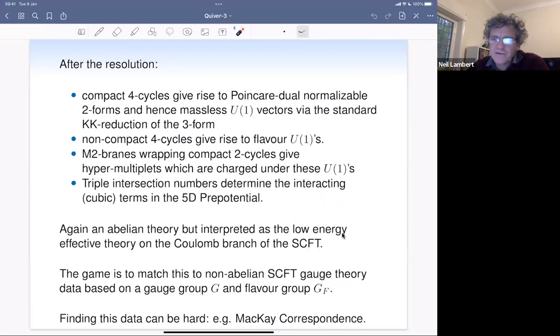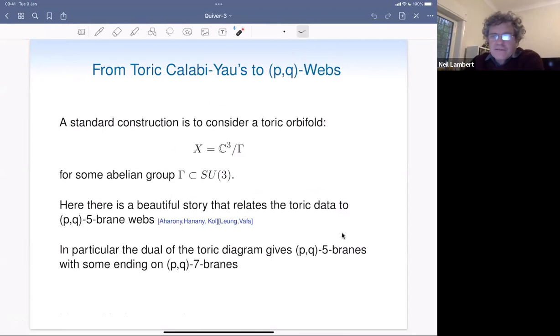The non-compact 4-cycles, they would give you vector fields, but their kinetic terms are infinite. So basically, you just get symmetry, so they give rise to flavor U(1)s. And then if you want to actually get states, apart from the photon modes from the gravity multiplet, you wrap M2 branes, of course, and when the cycles collapse, they become massless. So wrapping on compact 2-cycles gives you states which become massless, and they're charged under the various U(1)s that you got from the compact 4-cycles. And then other information is the triple intersection numbers, which lead to this cubic term in the 5D prepotential of the low energy effective theory on the Coulomb branch.